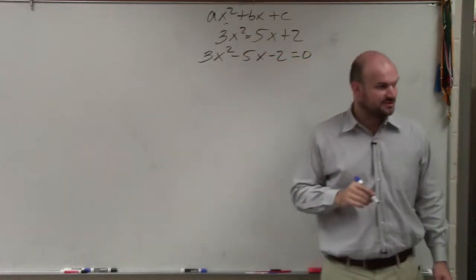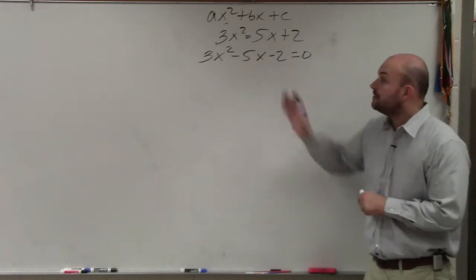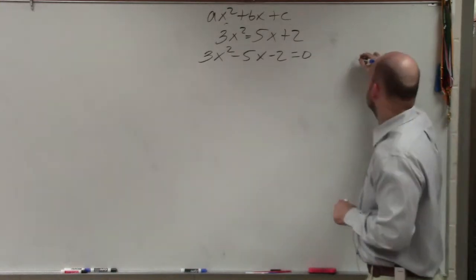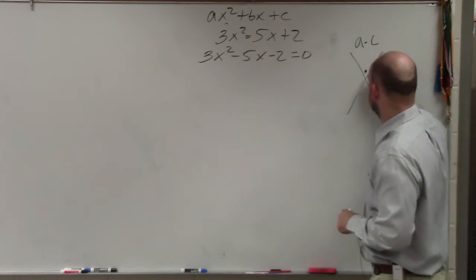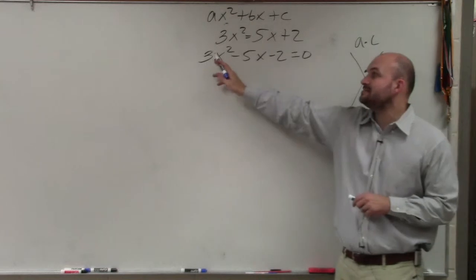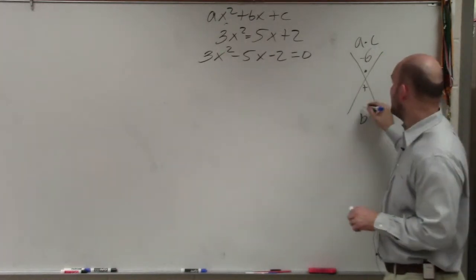Does everybody follow me? I'm just moving along a little bit quicker. So now you guys can see that now we have an a here. Before, a was 1. So we're still going to follow the same process, but now it's a times c and then b. So I multiply a times c. 3 times negative 2 is a negative 6 and then negative 5.